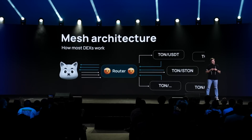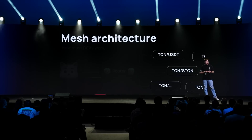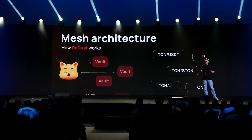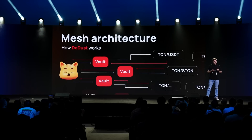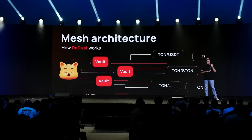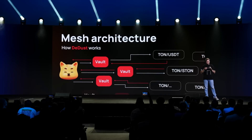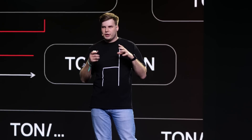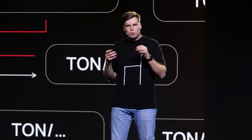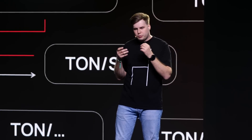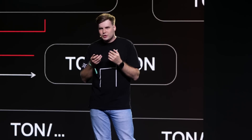Let's take a look at how it works in dDust. In the central contracts, we use Vault instead. Each Vault handles a single asset, meaning it operates independently without affecting other assets. Just imagine empowering this mesh architecture with multi-hop swaps — it's low-cost, smooth transactions. It works like magic.